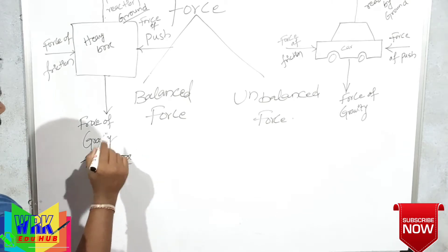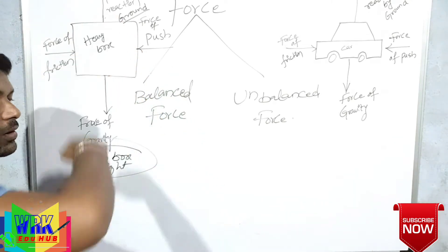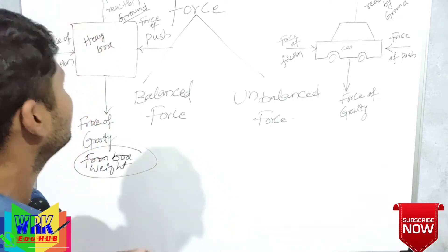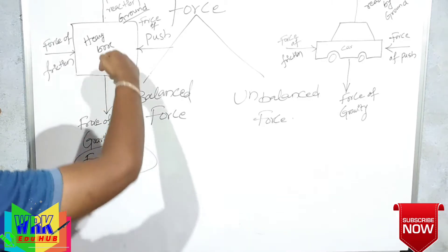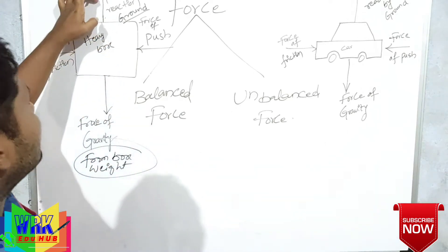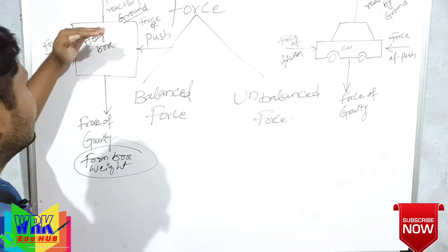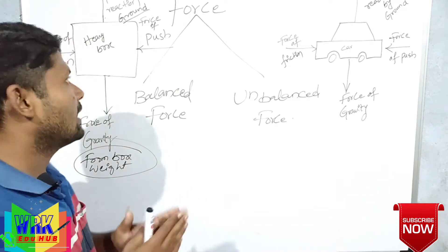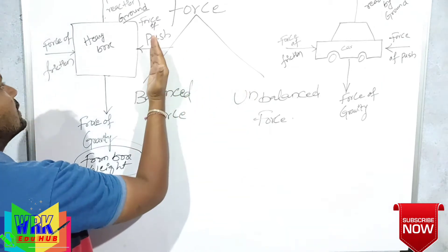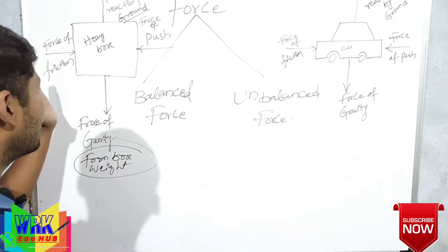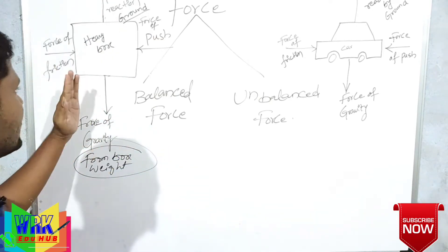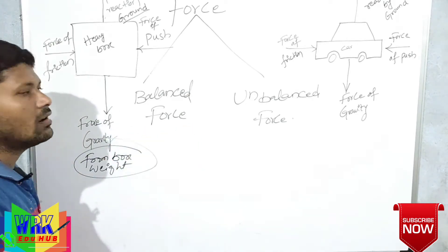Weight of the box always acts towards the ground. At the same time, the same force is applied on the box from the ground — from the earth. These are always equal and opposite in direction. Weight of the box is towards the ground; at the same time, from the ground, the same force of reaction acts on the box. These are the top and bottom forces. Then, the side forces are force of friction and force of push. If you want to push this box, the same force of friction acts on this heavy box.